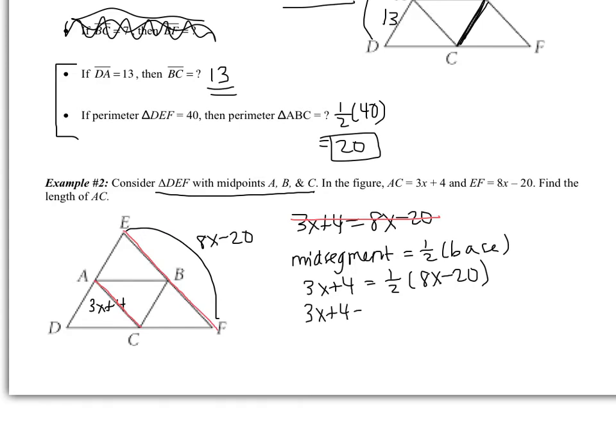So if I distribute the 1 half, I still have 3X plus 4. Half of 8X is going to be 4X, and then half of 20 is going to be 10. I have to subtract 3X, which leaves me with X. I have to add 10, which leaves me with 14. So I get X equals 14, but I have to remember that's not my final answer.